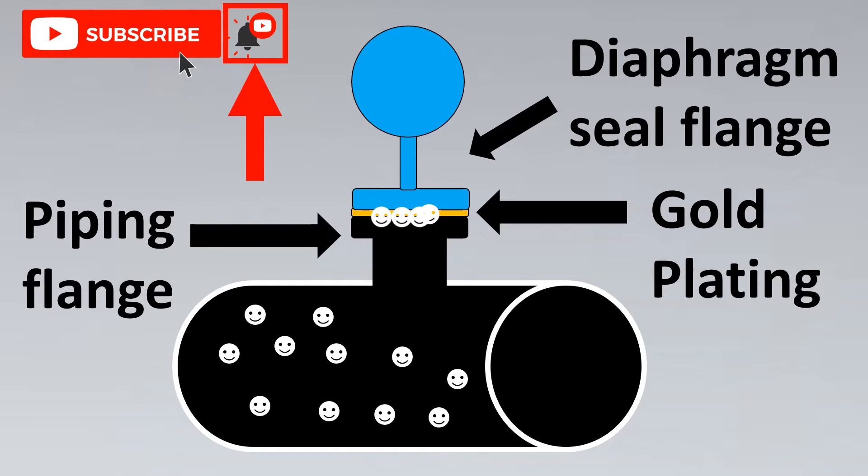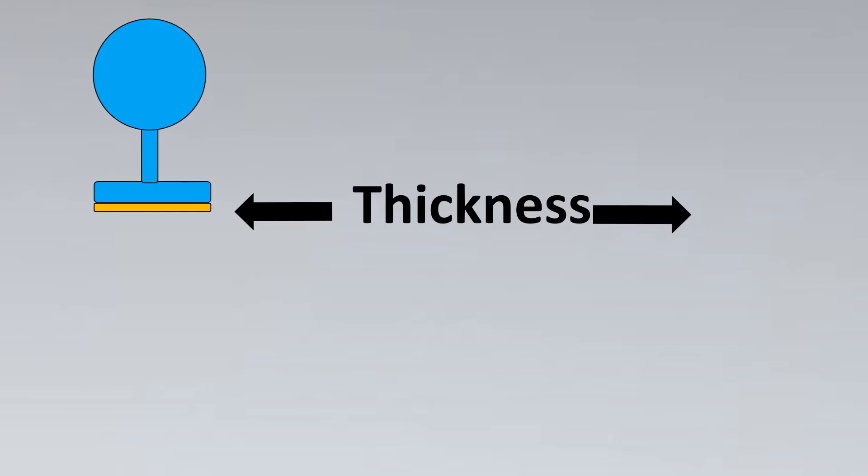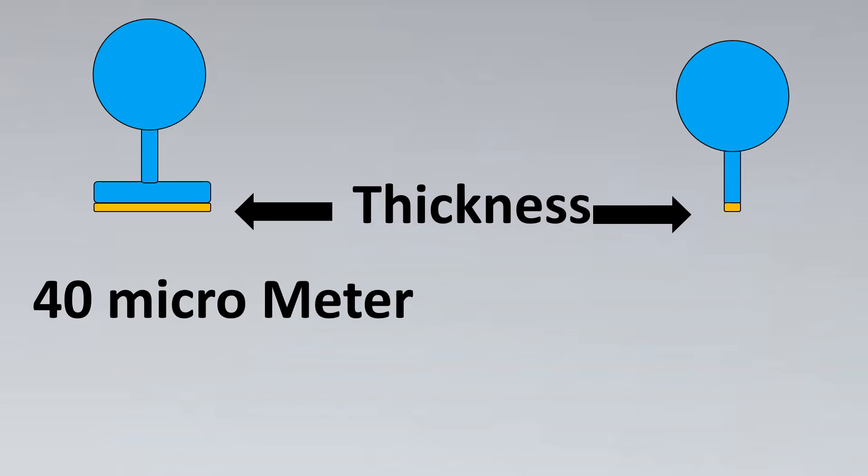Now let's look into the next interesting part, which is the thickness of the gold plating. How thick do we have to keep the gold plating? For such cases, let's look into two cases. If it's a diaphragm seal system, we usually go for 4 micrometers. But for transmitters without a diaphragm seal in hydrogen service, we usually go for 25 micrometers.